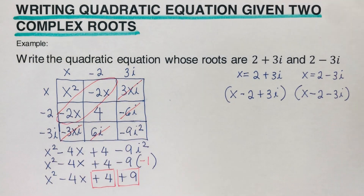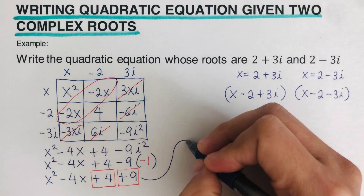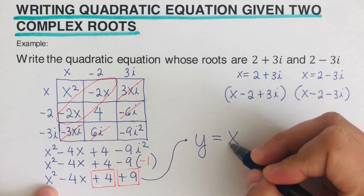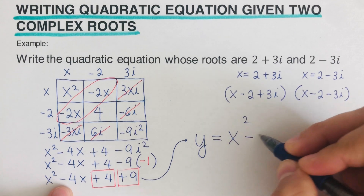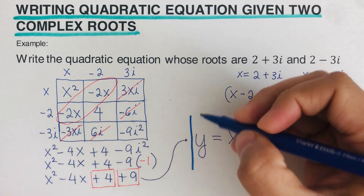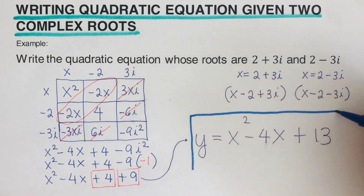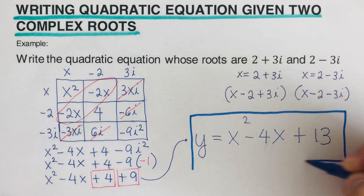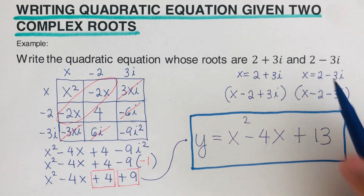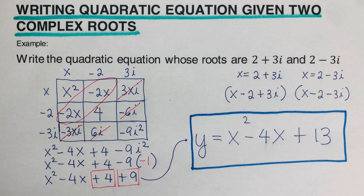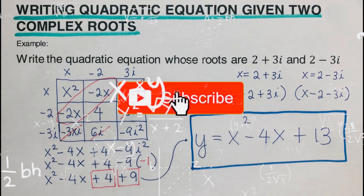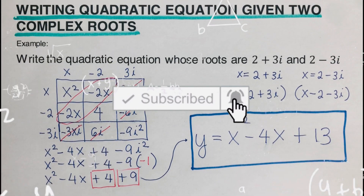Finally, the quadratic equation is y = x² − 4x + 13. This is the quadratic equation that has roots of 2 + 3i and 2 − 3i. If you find this video helpful, hit like and subscribe for more math videos!